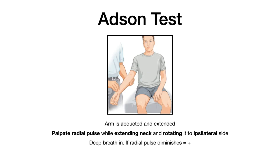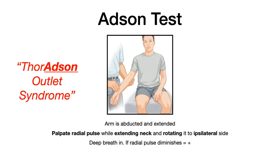The Adson test is testing for Thoracic Outlet Syndrome. The patient is seated with their arm slightly abducted and extended. The physician monitors the radial pulse, then extends the patient's neck and has the patient rotate their neck to the ipsilateral side — toward the physician. The patient then takes a deep breath in, and if the radial pulse diminishes, that's a positive Adson test indicating possible Thoracic Outlet Syndrome. Mnemonic: say 'Thoradson Outlet Syndrome' — Adson tests for Thoracic Outlet Syndrome.